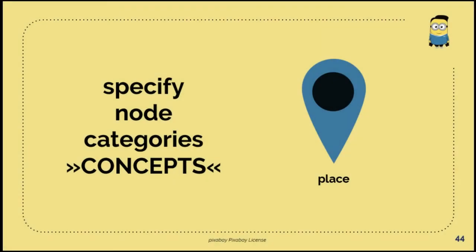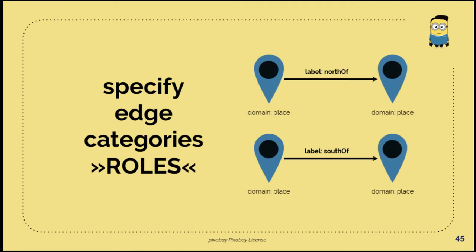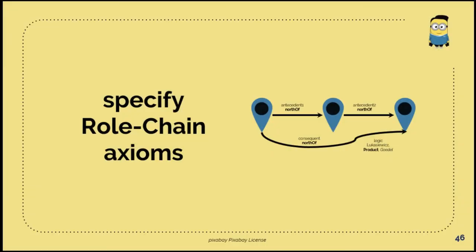First we have to develop an ontology and to specify some nodes in it, some concepts. In this example, we have a place. Then we have to specify some kind of roles. Here it's north of and the opposite of it is south of. And then we can also specify some kind of role chain axioms. If A is north of B and B is north of C, the result is that A is in the north of C in a certain degree.